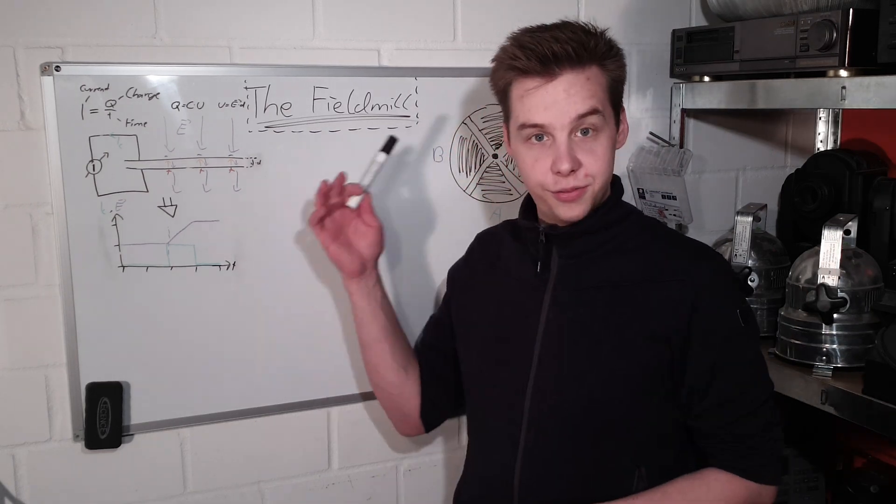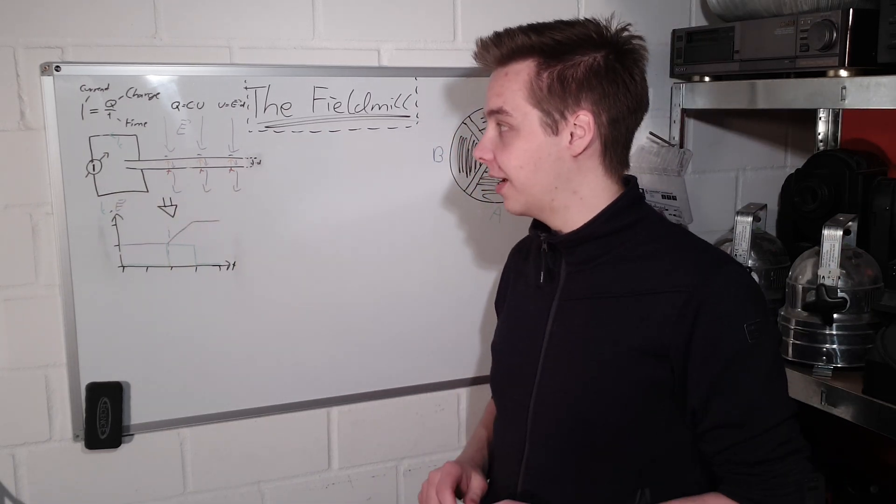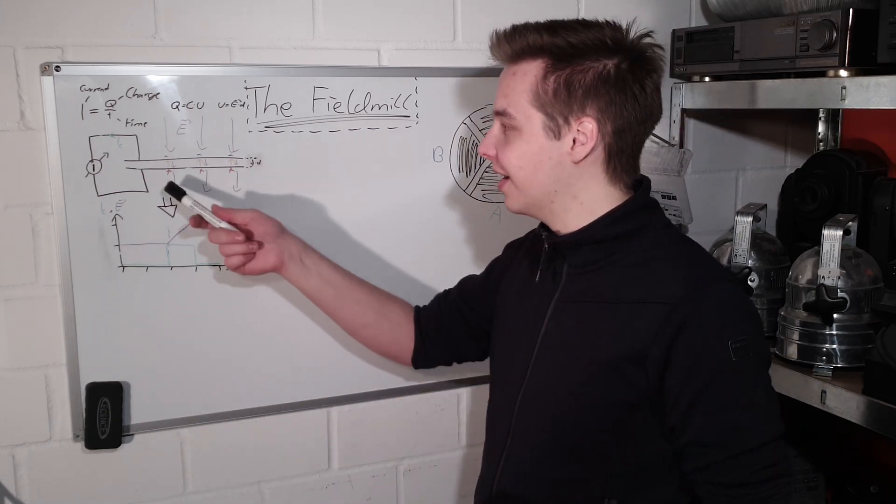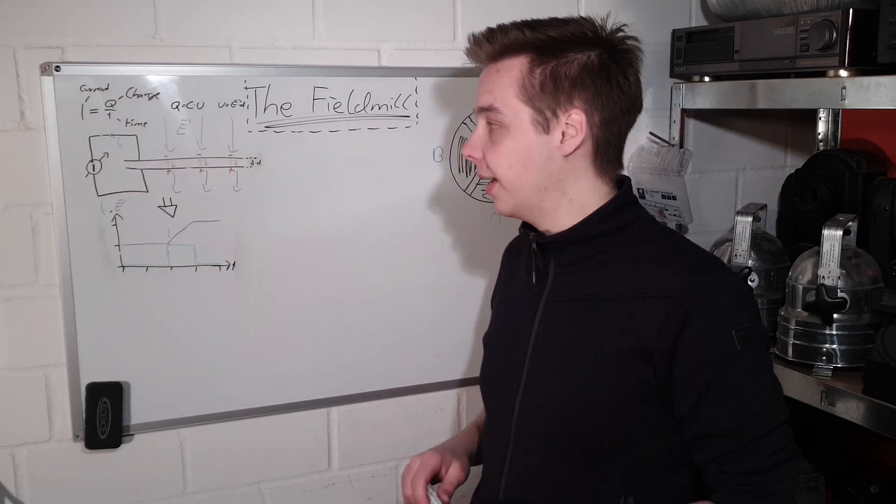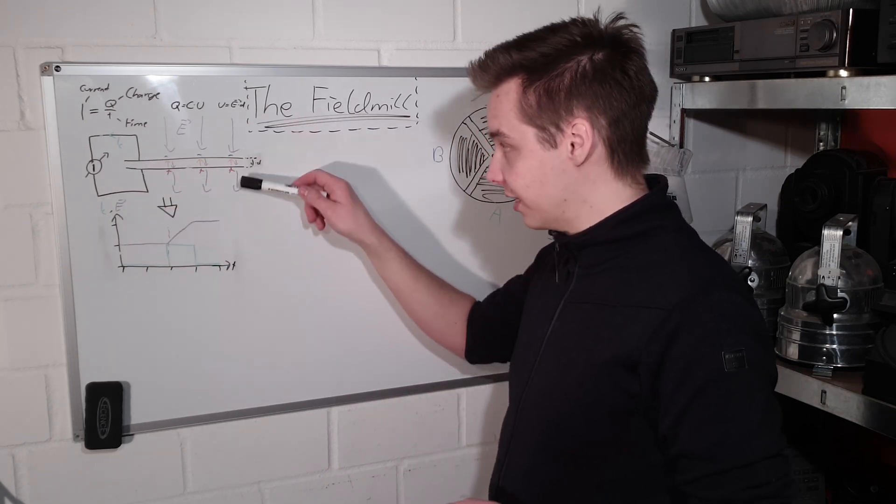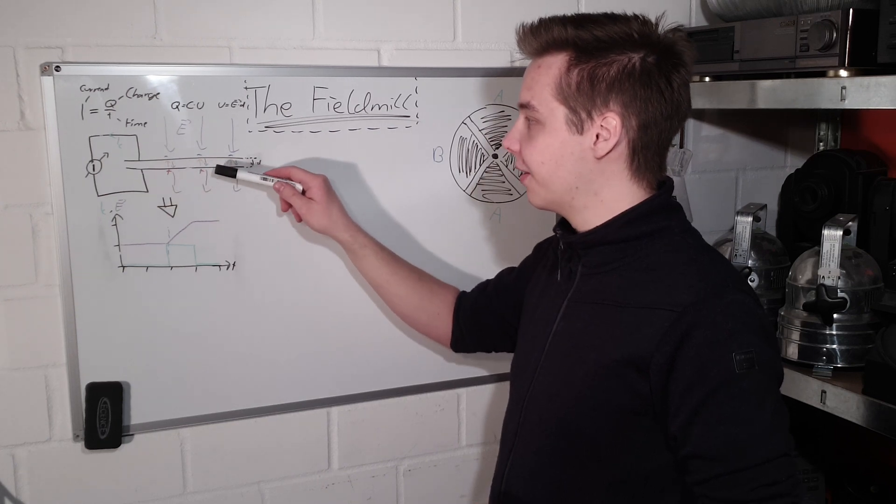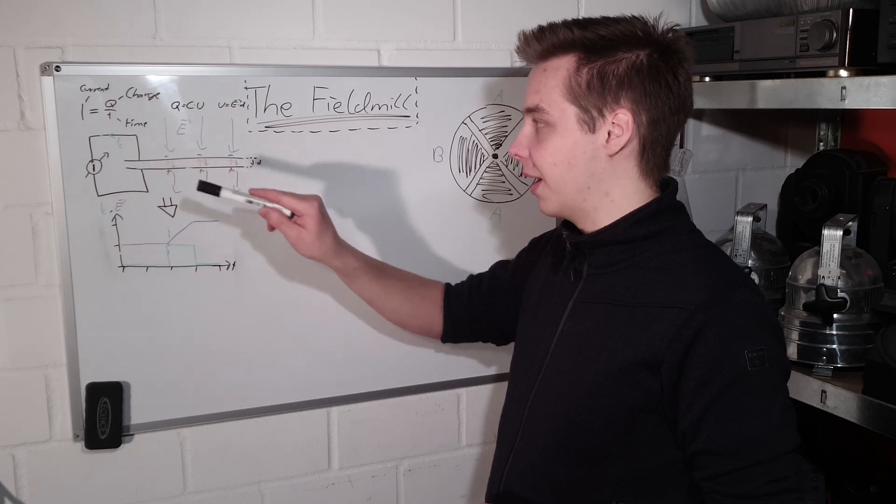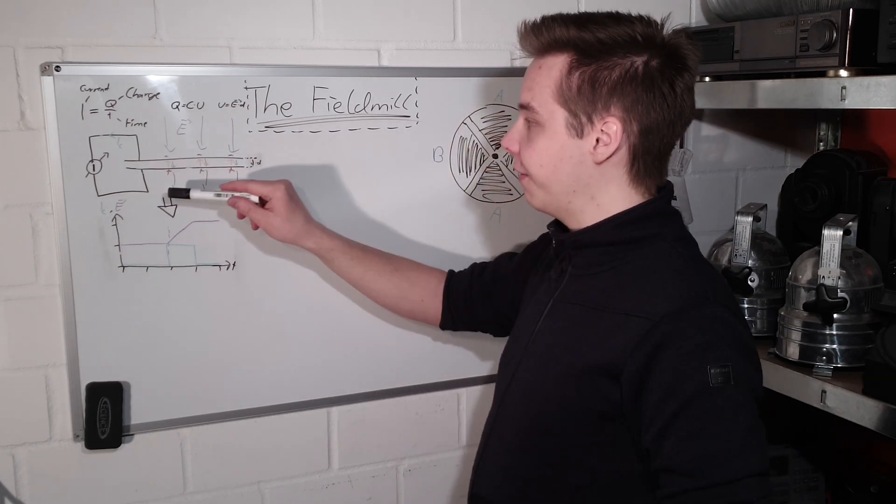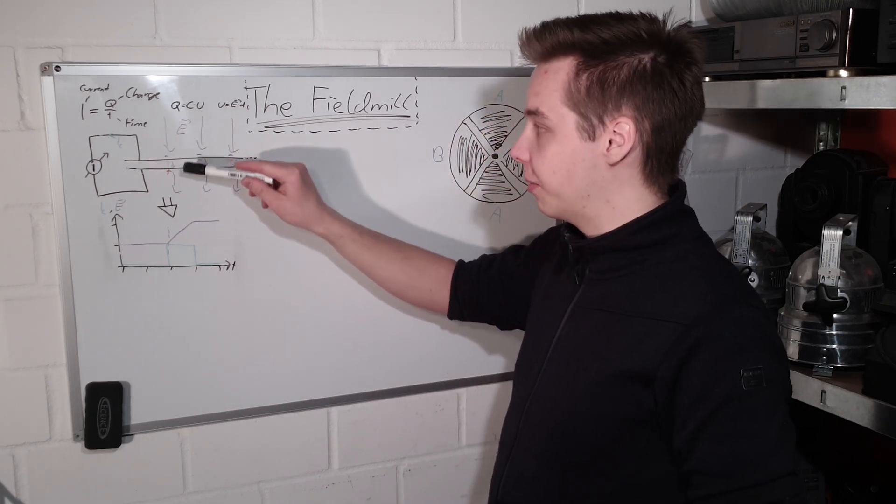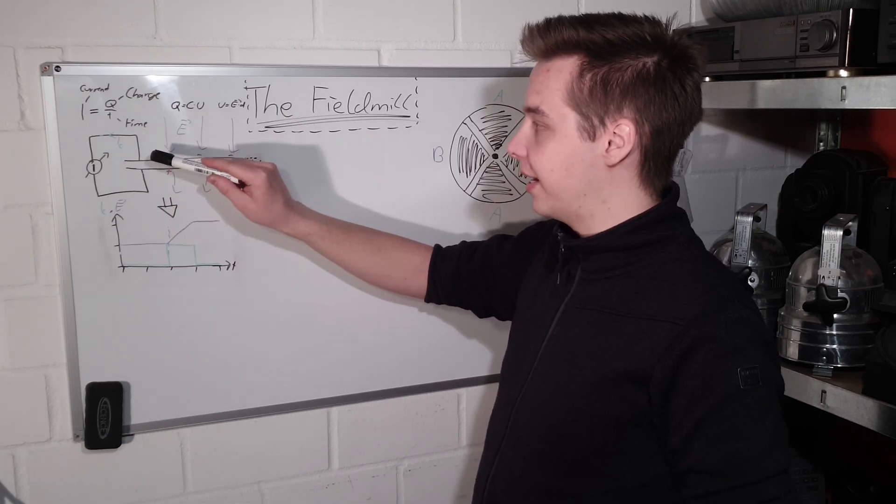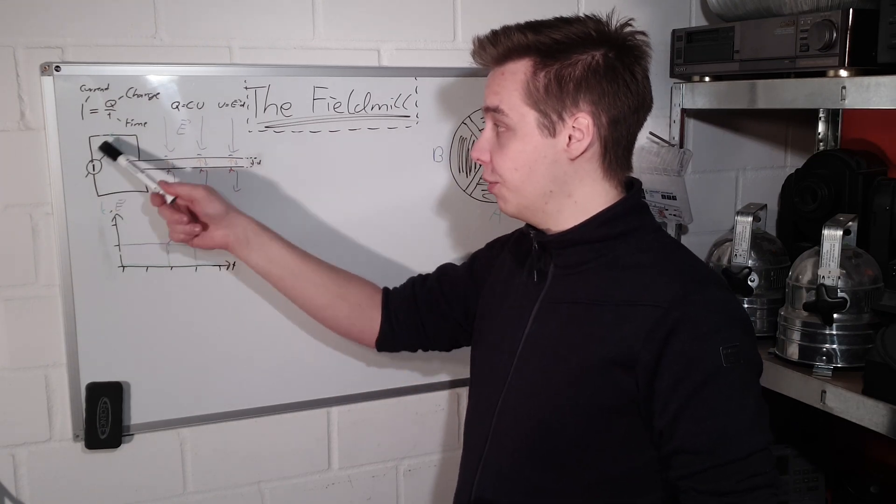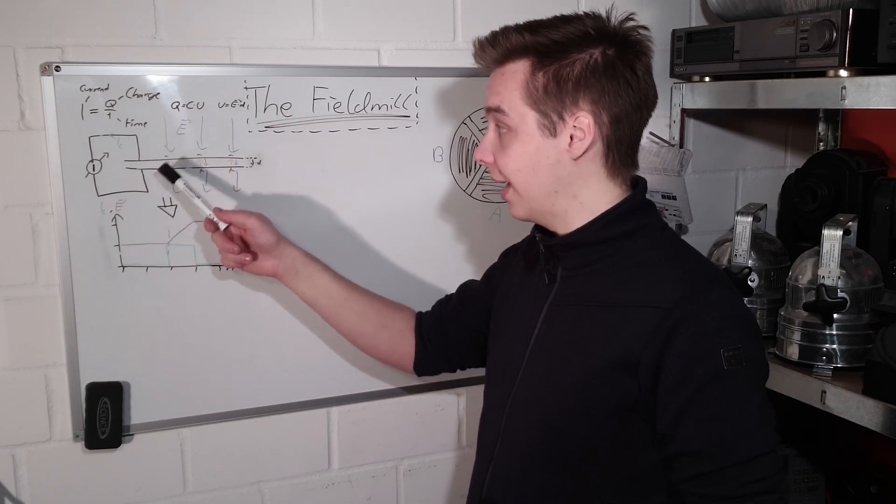In order to understand the field mill, we should start off by understanding the most basic electric field sensor, which is just a plate capacitor or two metal plates next to each other, connected with a current meter. Basically what happens if a field is applied to this, is that the charges will move until the field inside the capacitor is entirely cancelled out by the field generated by these charges. These charges, when they move, obviously create a current and we can measure that.